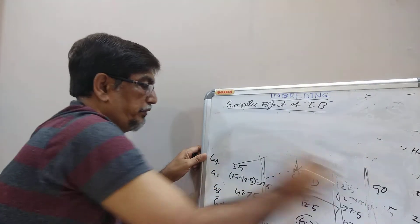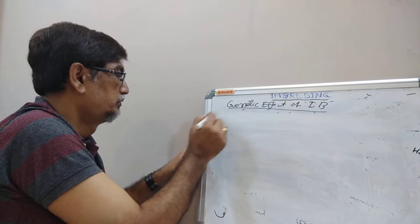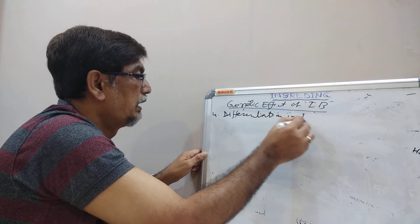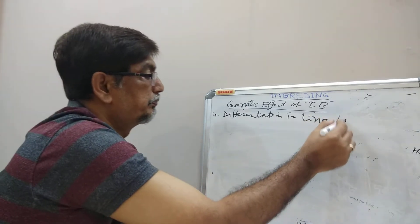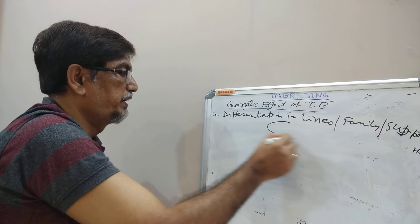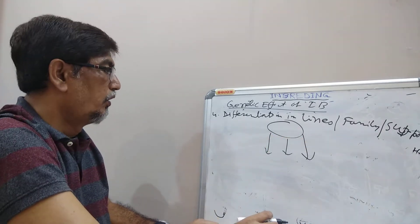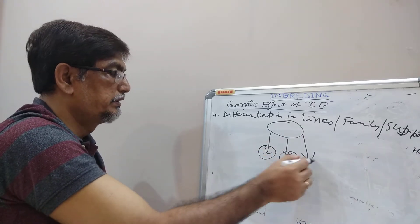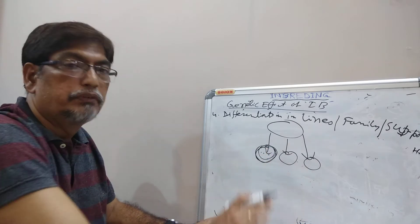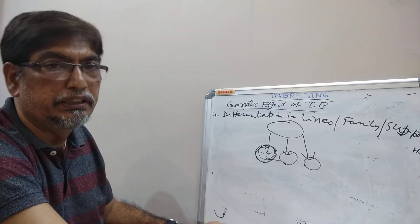Due to inbreeding, there is a differentiation of population into lines, families, or subpopulations. So if we go ahead, the base population ultimately, due to inbreeding increasing, will produce different lines or families, different subpopulations. Within the same lines, individuals have less variation, but population to population, family to family, or line to line, there are genetic differences.